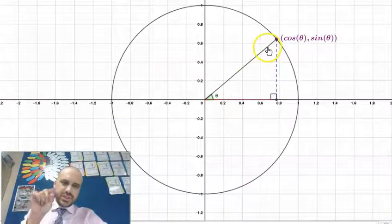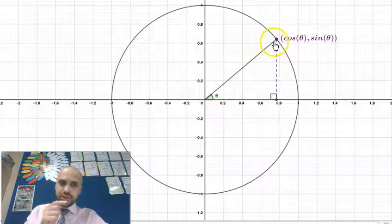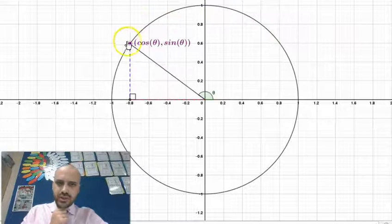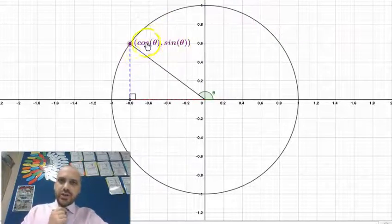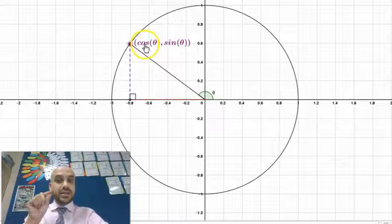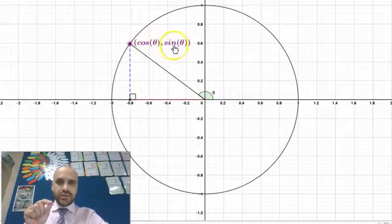This is going to have implications in our next video when we do those worked examples, because as we move into quadrant 2, when we do sine theta divided by cos theta, we're going to get tan theta, and tan theta is going to be negative because one of those values is negative.